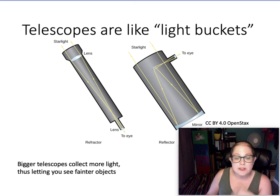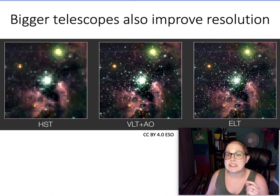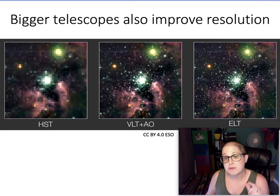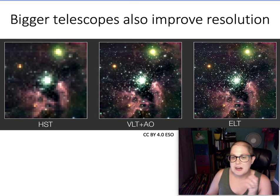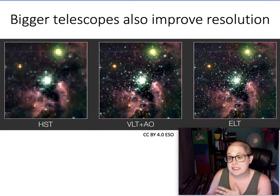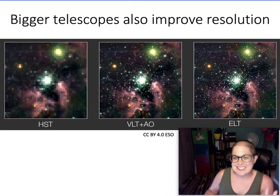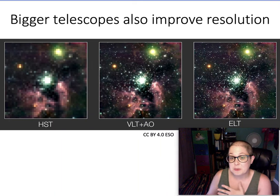Big telescopes also improve resolution. Resolution is how fine the details are that you want to see — you want a really small angular resolution for it to be good. These are some examples from the Hubble Space Telescope, which has really amazing resolution compared to more advanced ground-based telescopes and telescopes in design, showing what those bigger telescopes would show you.